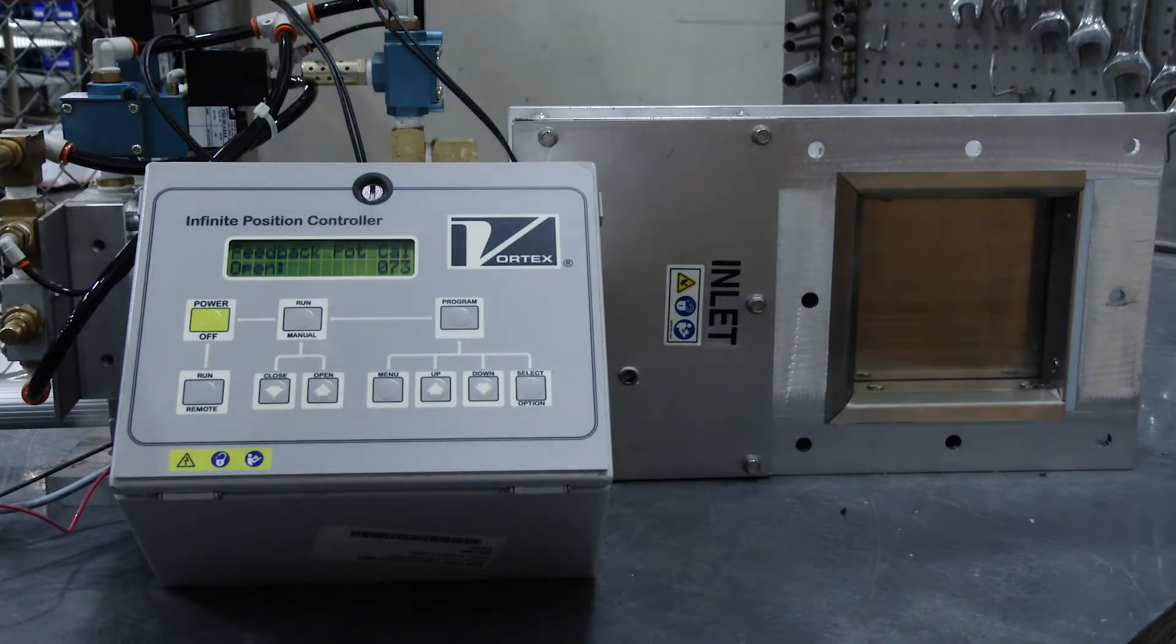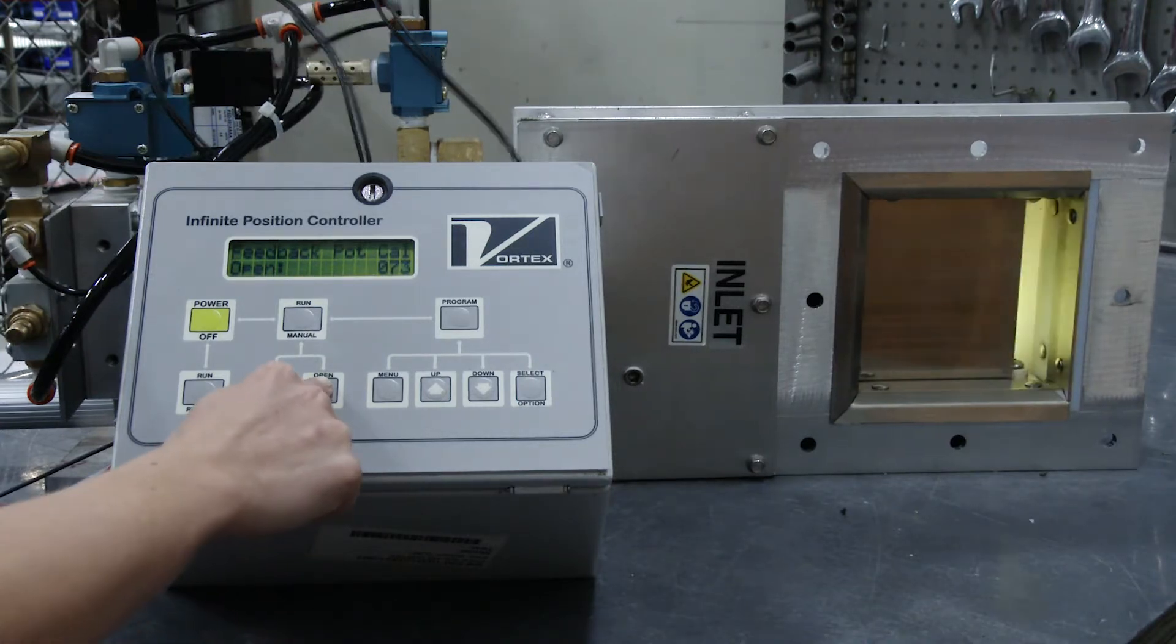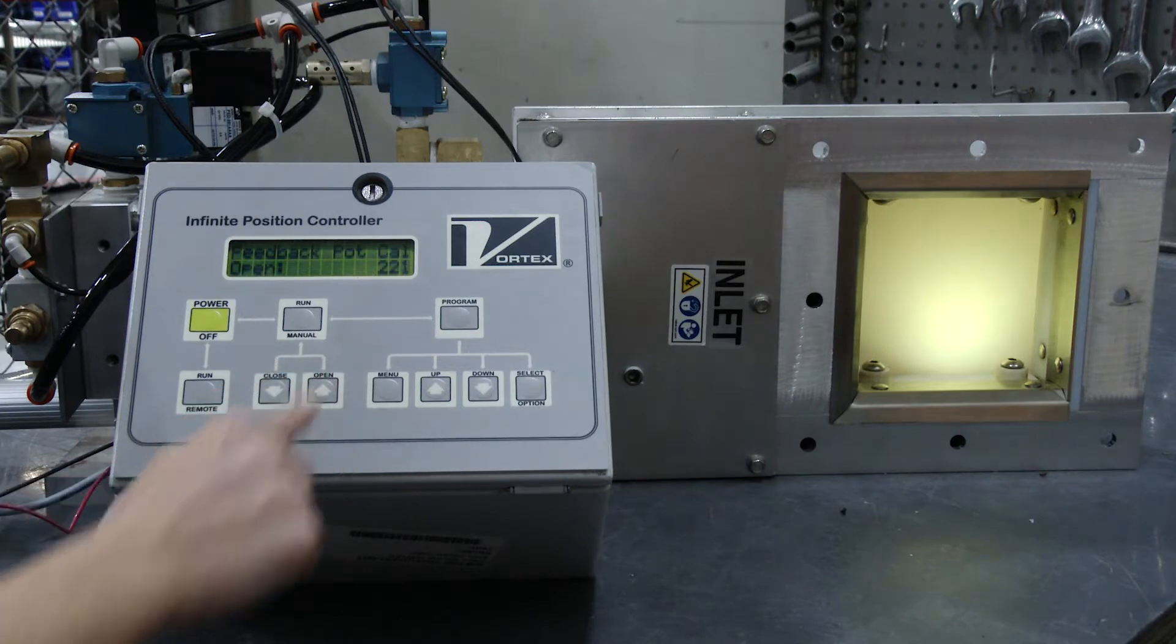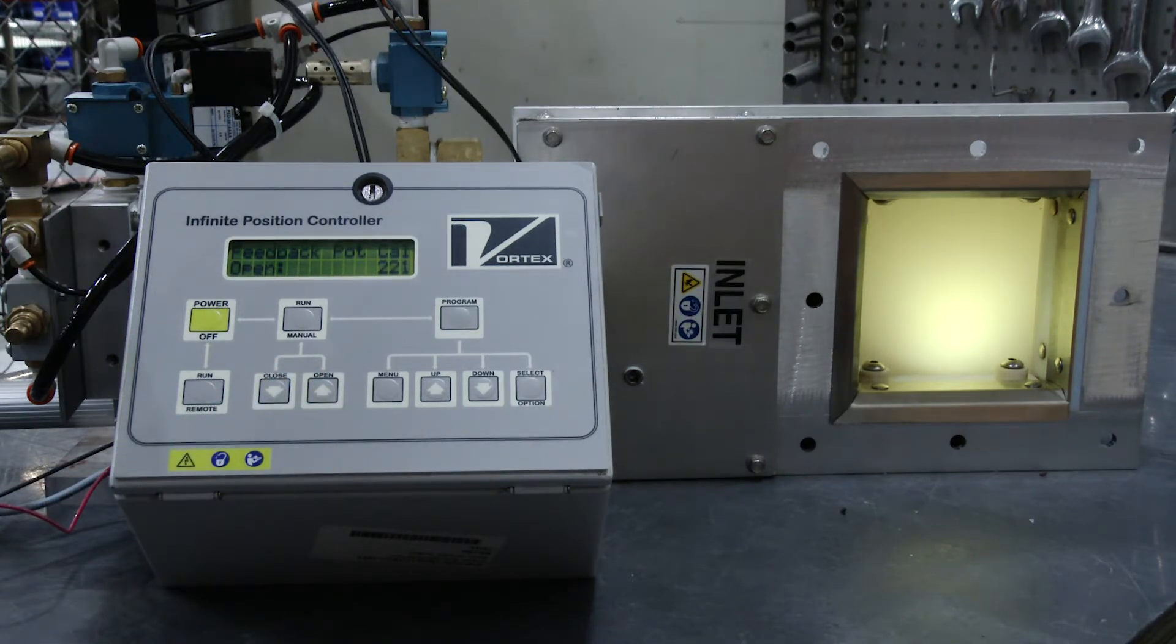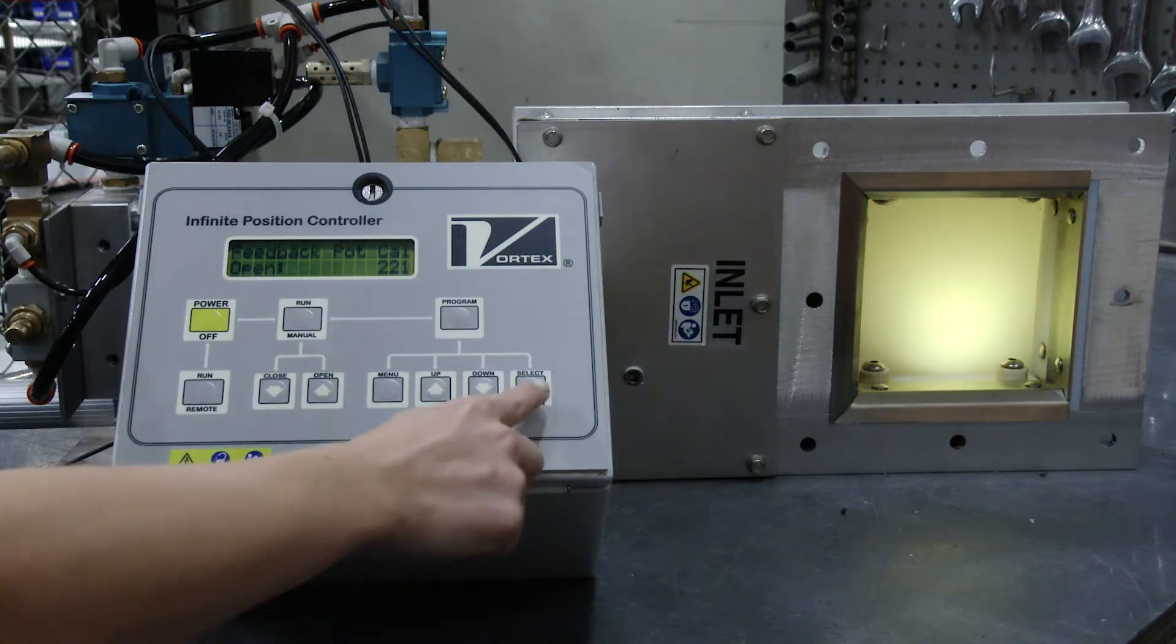Next, we will calibrate the Open position. Press the Open button under the Run Manual button. Once the valve is in the fully open position, press the Select Option button.